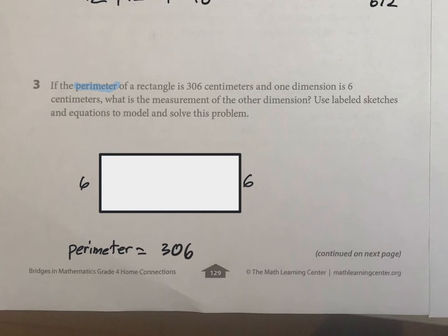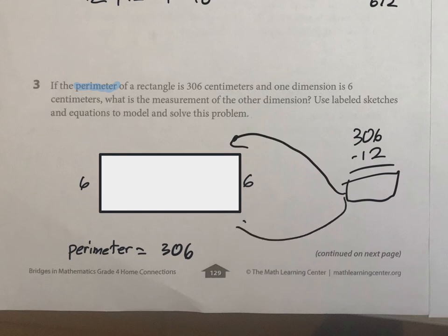So what I need to do basically is I add those together, I have 12, and I can subtract that. And then whatever I have left is going to be split to this side and to this side. So I'll need to divide that by 2, whatever is left, to figure out the perimeter.